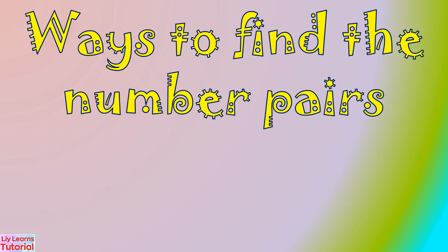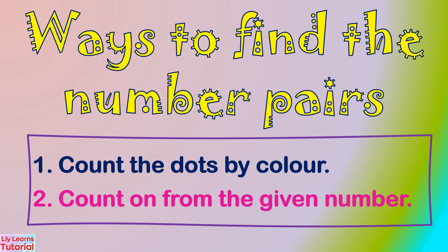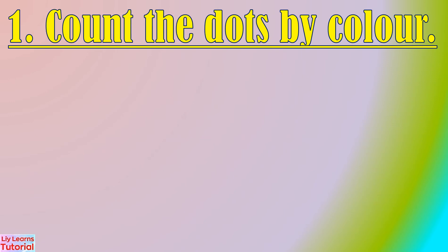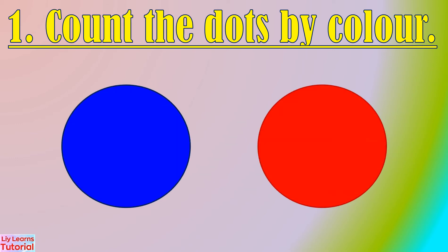There are two ways to find the number pairs. First, count the dots by color. Second, count on from the given number. In this example, we'll count the dots by color using blue and red dots.